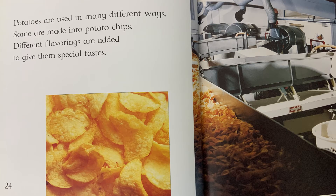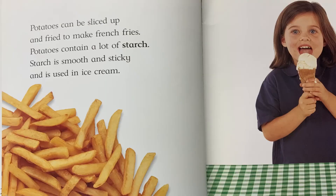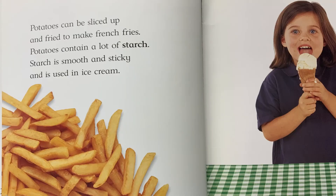Potatoes are used in many different ways. Some are made into potato chips — different flavorings are added to give them special taste. Remember the chips I showed you earlier? That was one of the flavors, and that kind is my kids' favorite type of potato chip. Potatoes can also be sliced up and fried to make french fries. If you ever go to McDonald's and order french fries, now you know where they come from — they make your favorite french fries from potatoes. Potatoes contain a lot of starch. Starch is smooth and sticky and is used in ice cream, so if you eat ice cream, you're eating potato too.